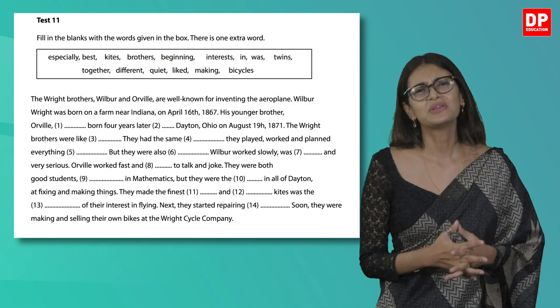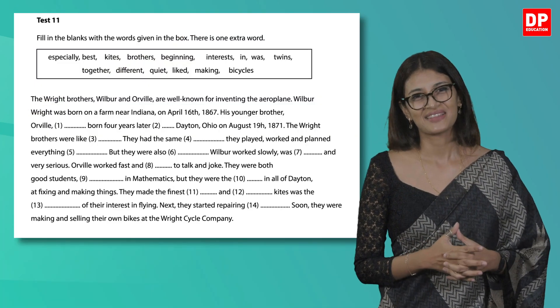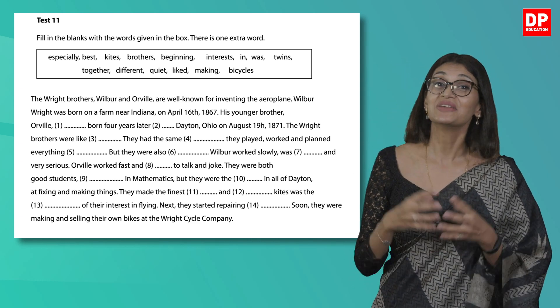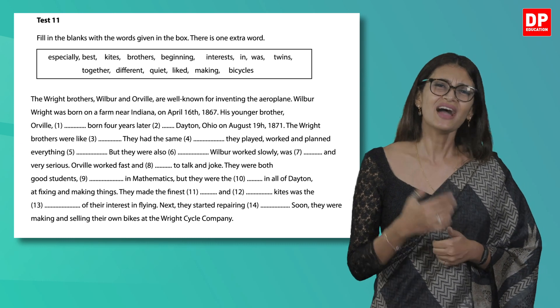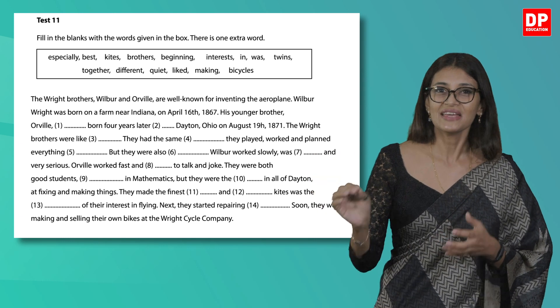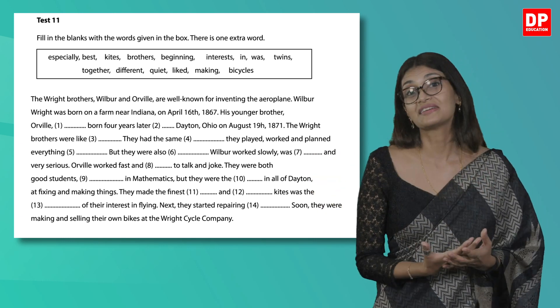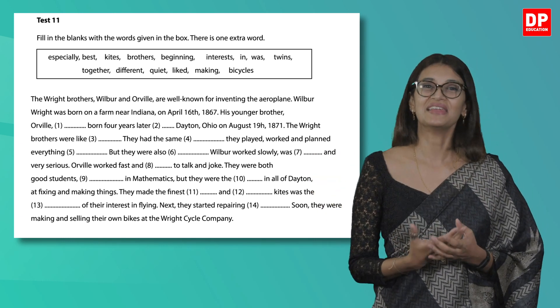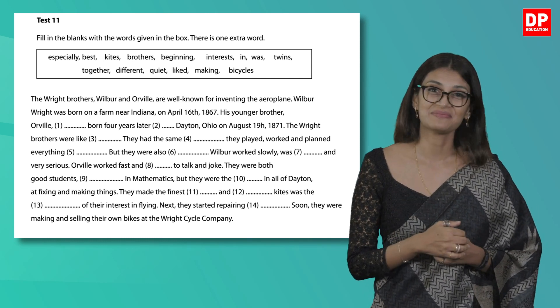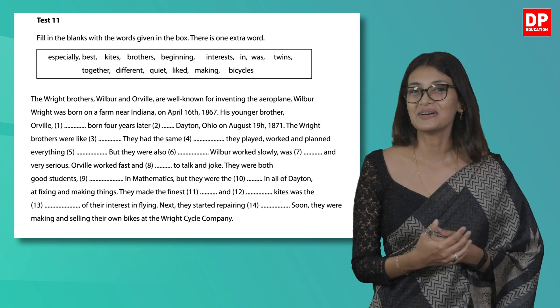That was simple because you simply had to fill in the missing spaces. For this exercise too, you are awarded five marks. Let's now look at Test 11. You are given some words in a box and you are asked to fill in the blanks using those words. I would suggest that for this task, you strike out the word that you use in the box so that you won't get confused about what words are left for use. Remember, there should be one extra word. Let's first read the words in the box.